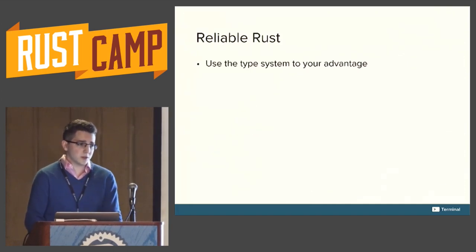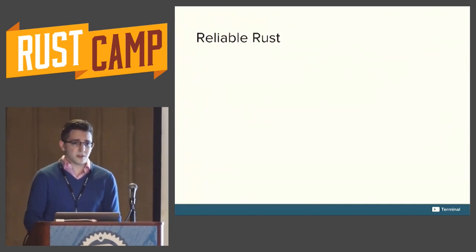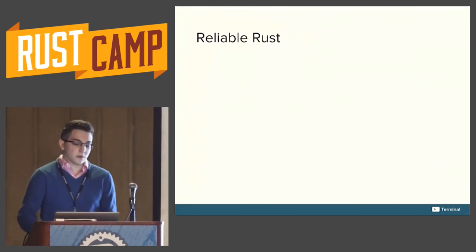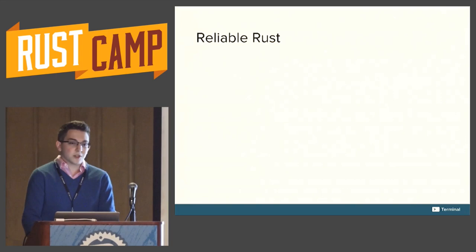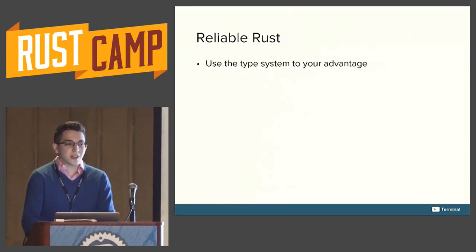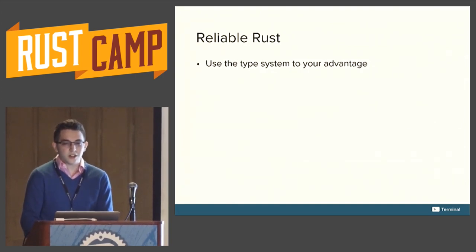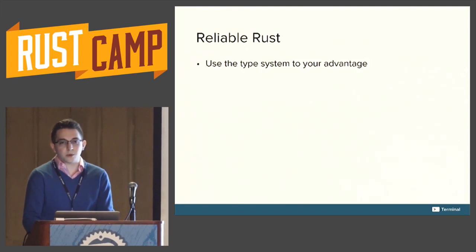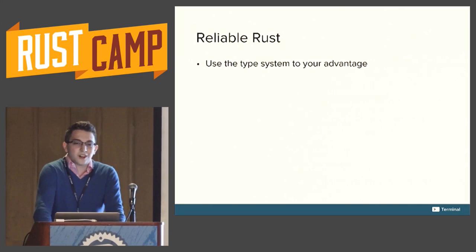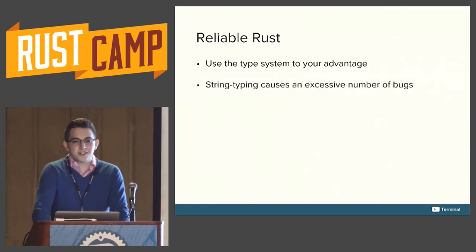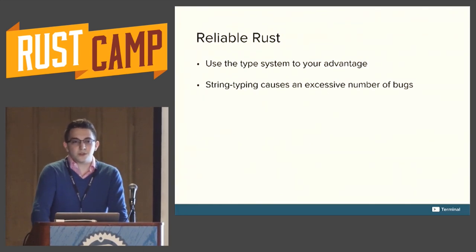So those are some of the tools. Now I'll get into some tips and tricks we've learned using Rust. The first tip for writing reliable Rust: use the type system to your advantage. Rust has a really excellent type system that you can encode all sorts of interesting invariants in. This can go a long way toward making your code more stable and easy to work with, and avoiding runtime errors. String typing causes an excessive number of bugs — you can almost always avoid it in Rust with the tools the type system gives you, and you probably should.